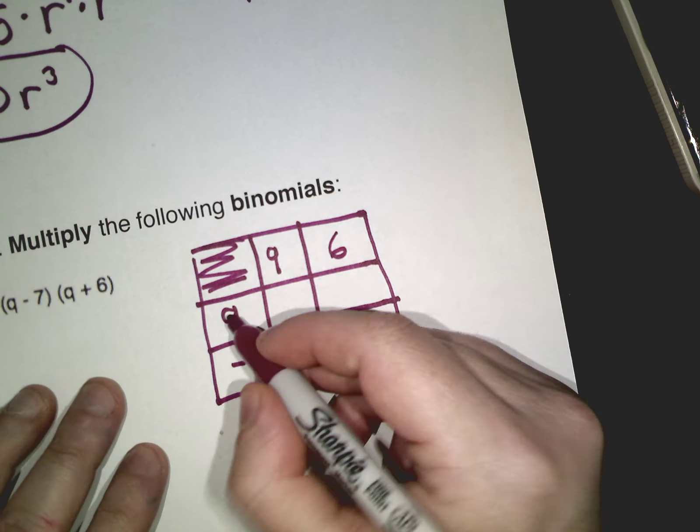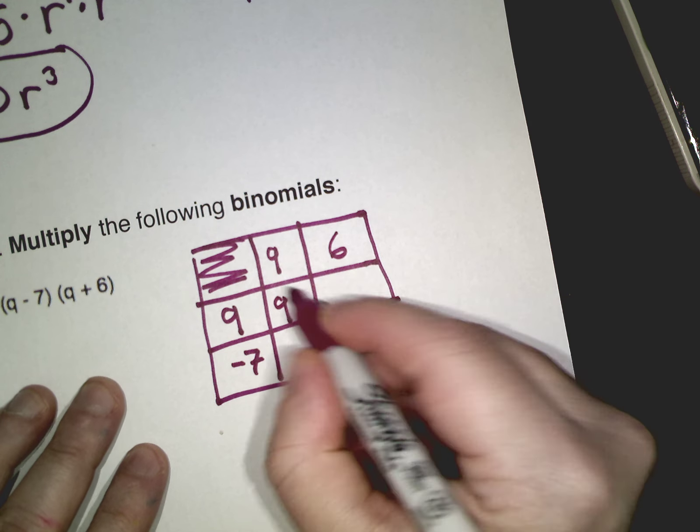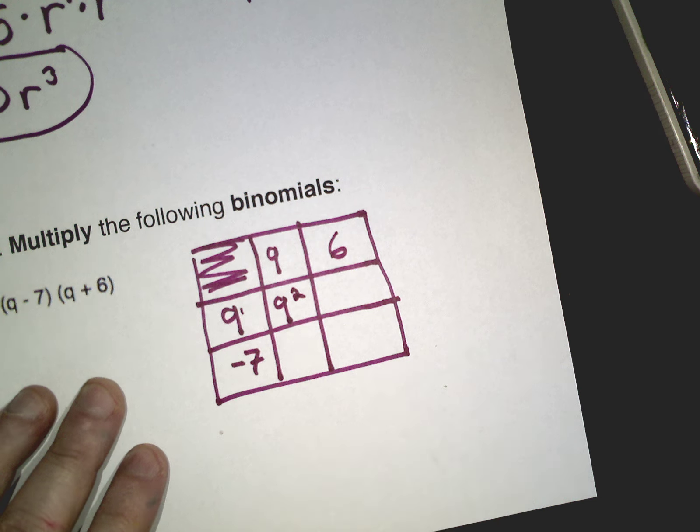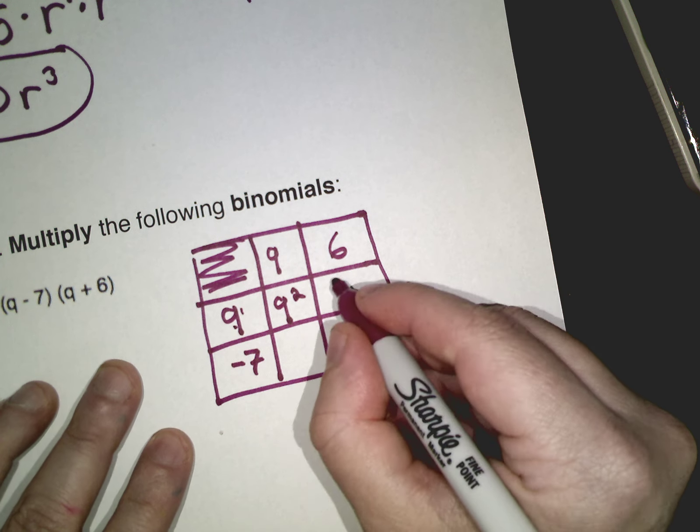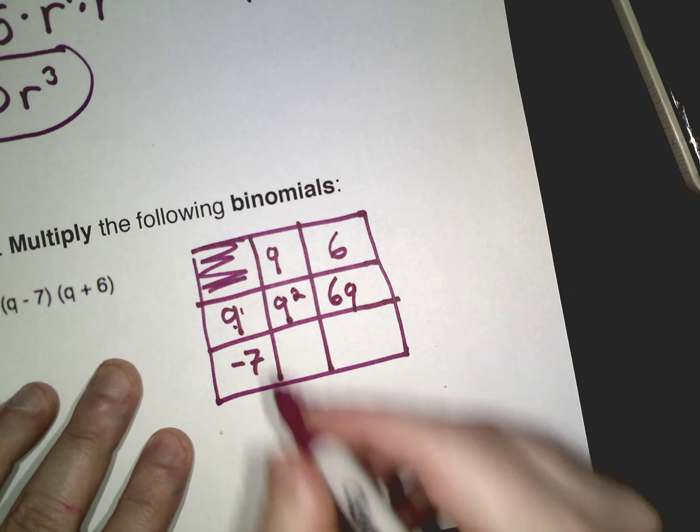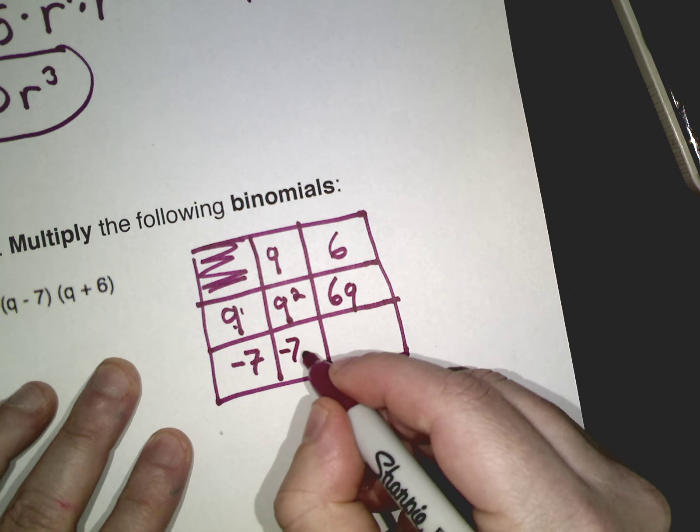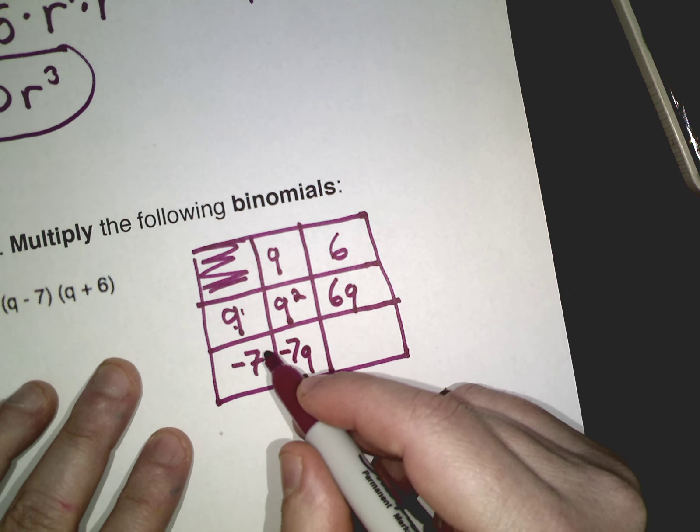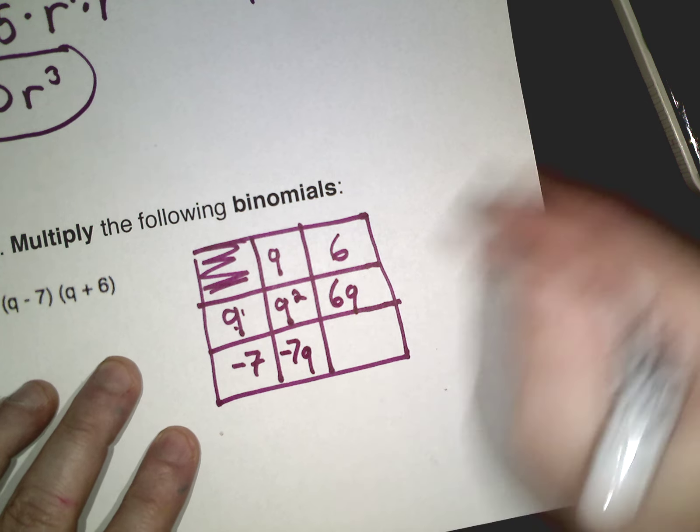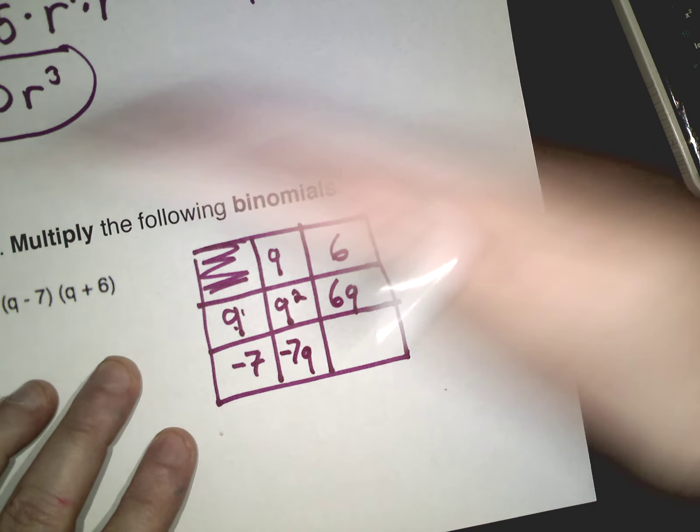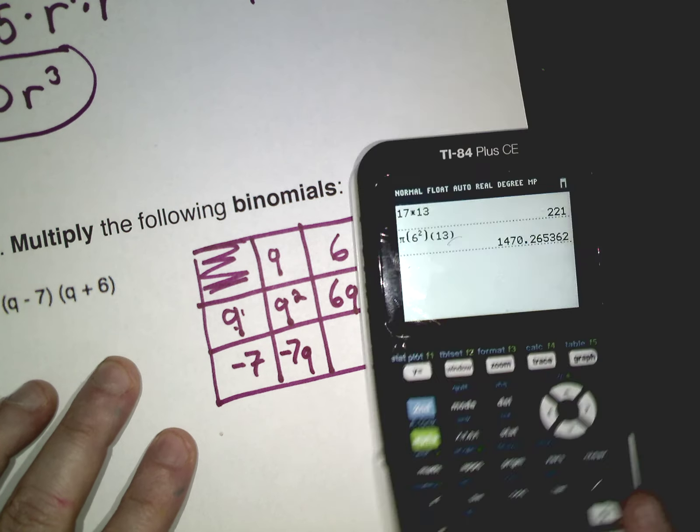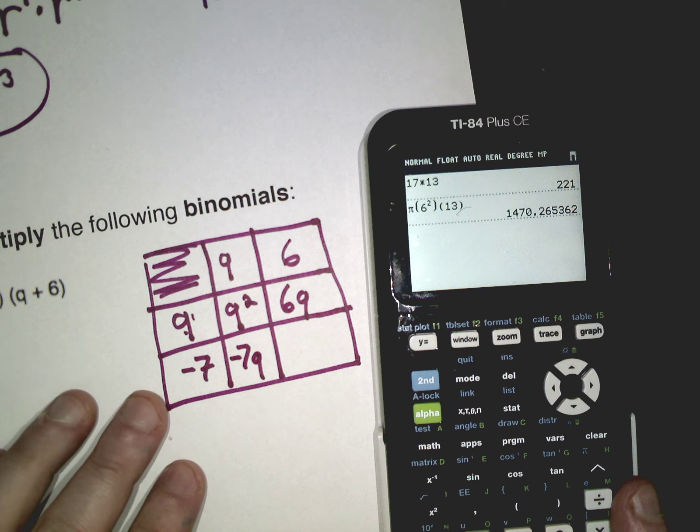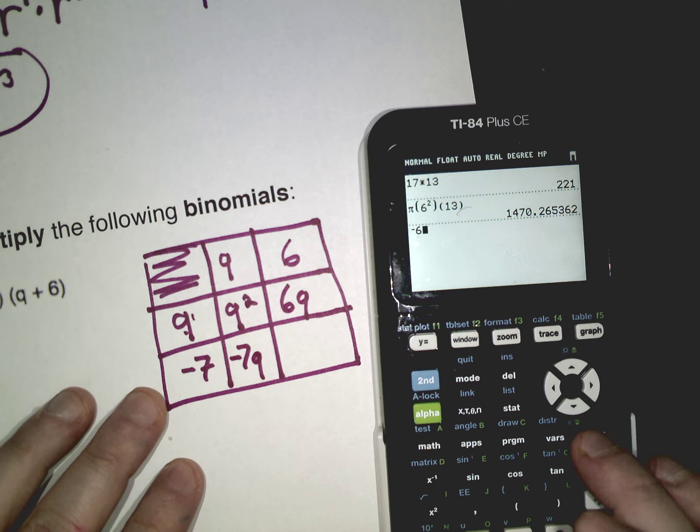Start multiplying. q times q, remember keep the base q, add the exponents 1 plus 1 is 2. Here 6 times q is just 6q, negative 7 times q is negative 7q, and negative 7 times positive 6, if you're unsure, use the calculator. Negative 7 times 6, I get negative 42.